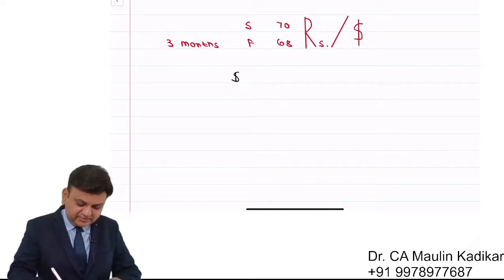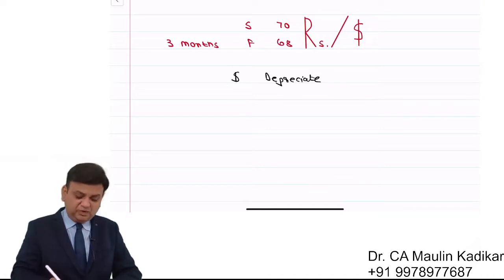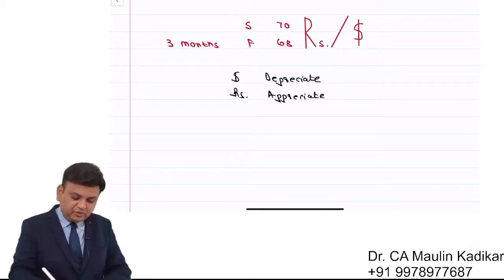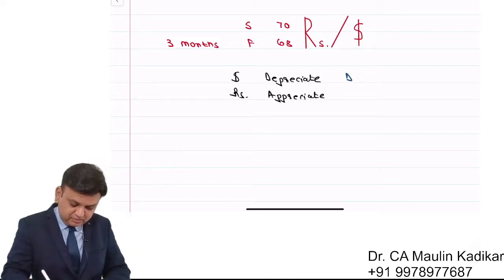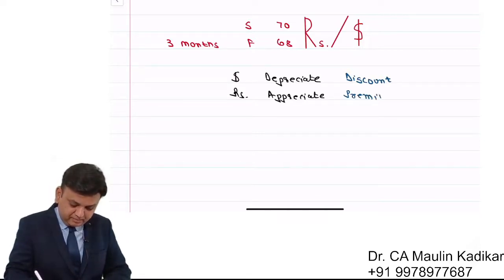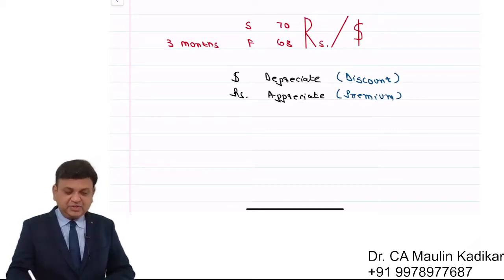This means that the dollar currency has depreciated — we can get less rupees per dollar. So we can say that the dollar currency is depreciated; it is at discount. And rupee currency has appreciated; it is at premium.